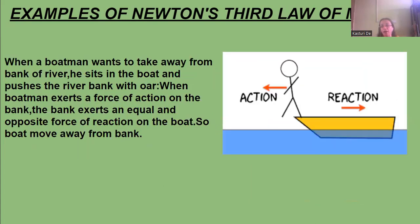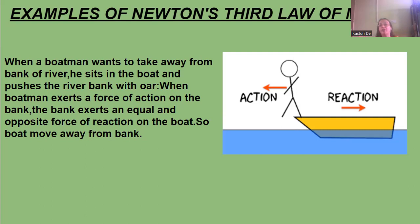When a boatman wants to take a boat from the bank of the river, he will sit in the boat and push the river bank with the oar. He pushes the bank and the boat moves forward. The bank exerts the same and equal force in the opposite direction on the boat, so the boat moves forward and away from the shore.